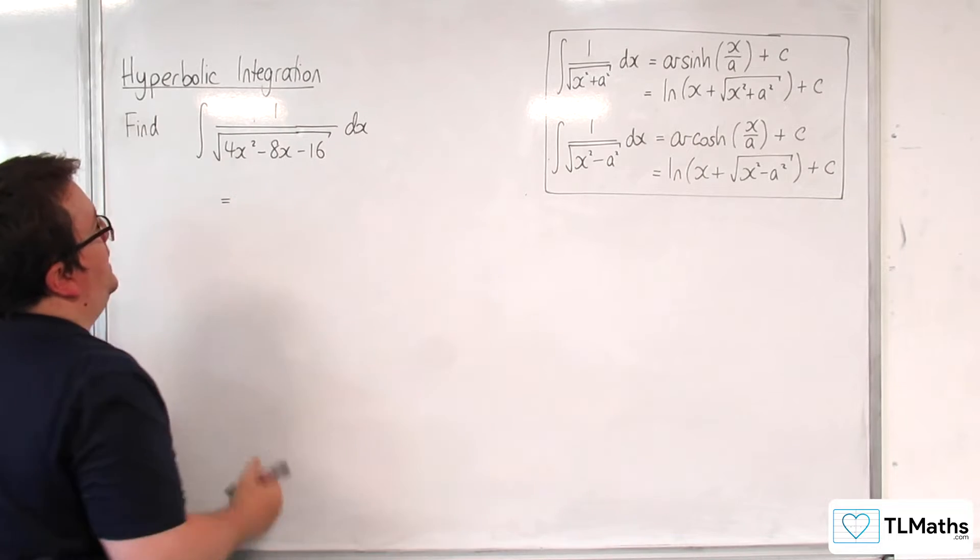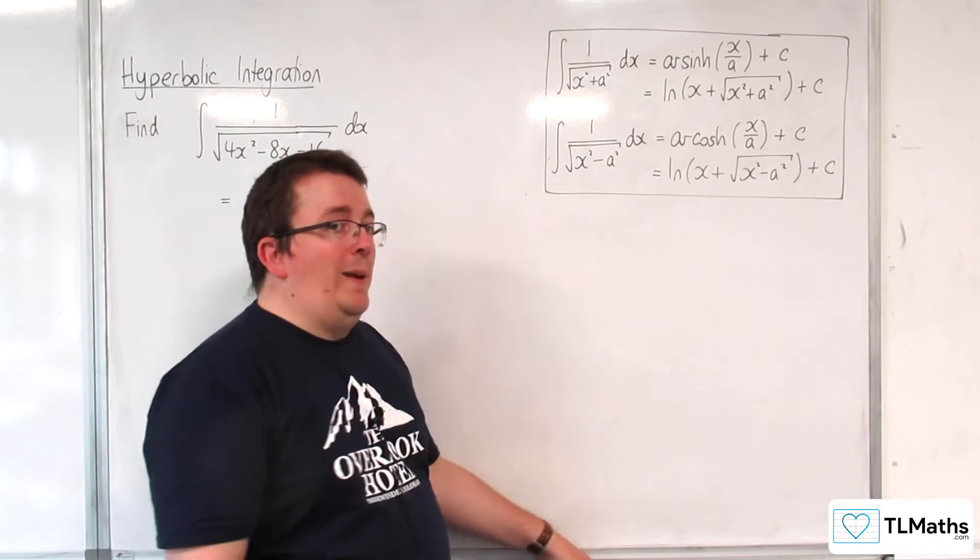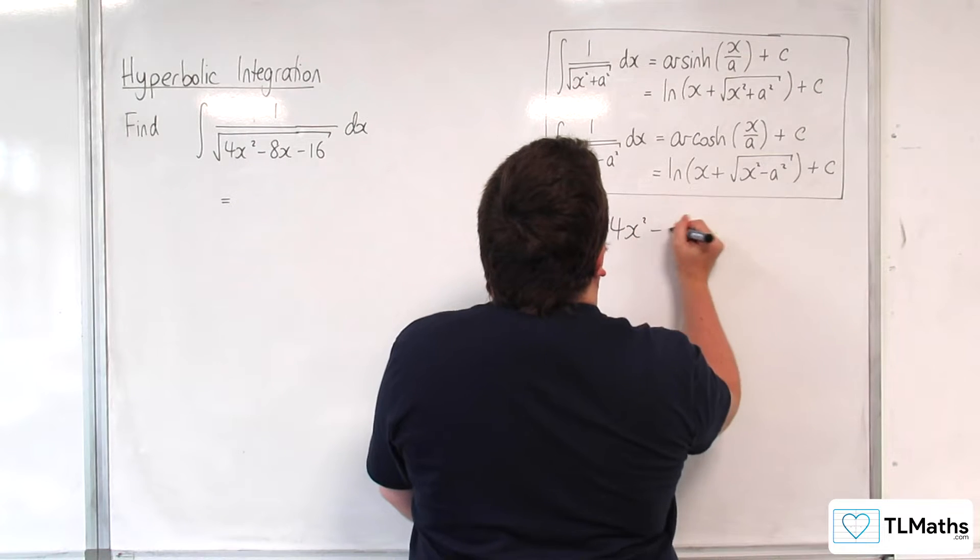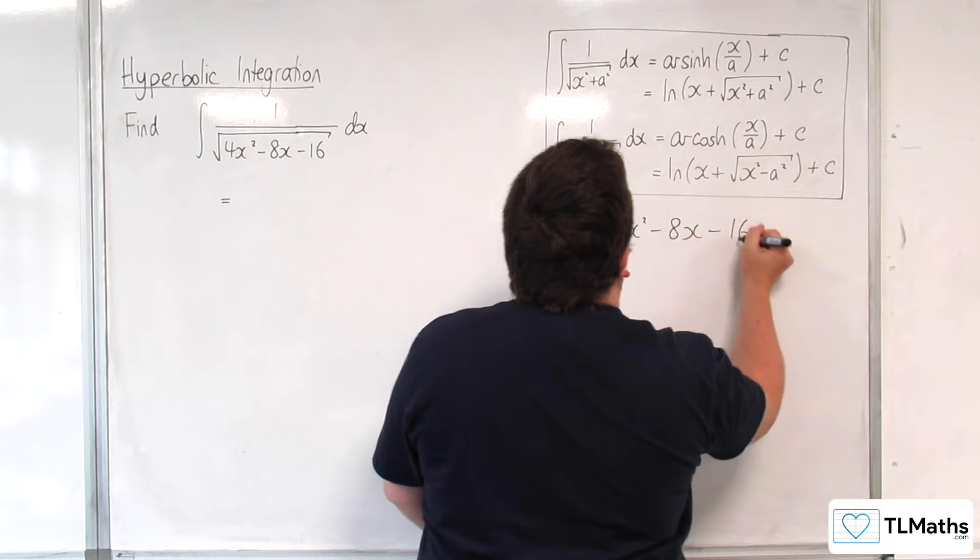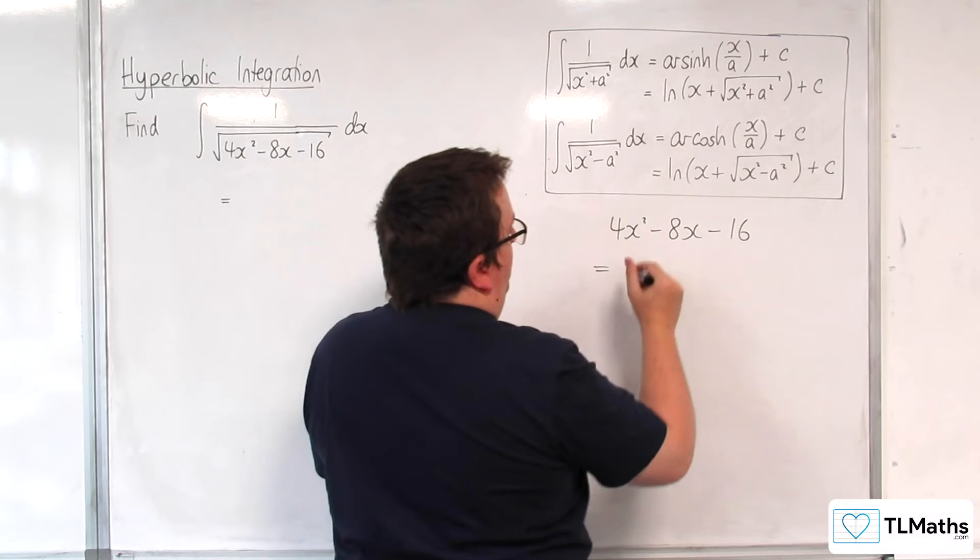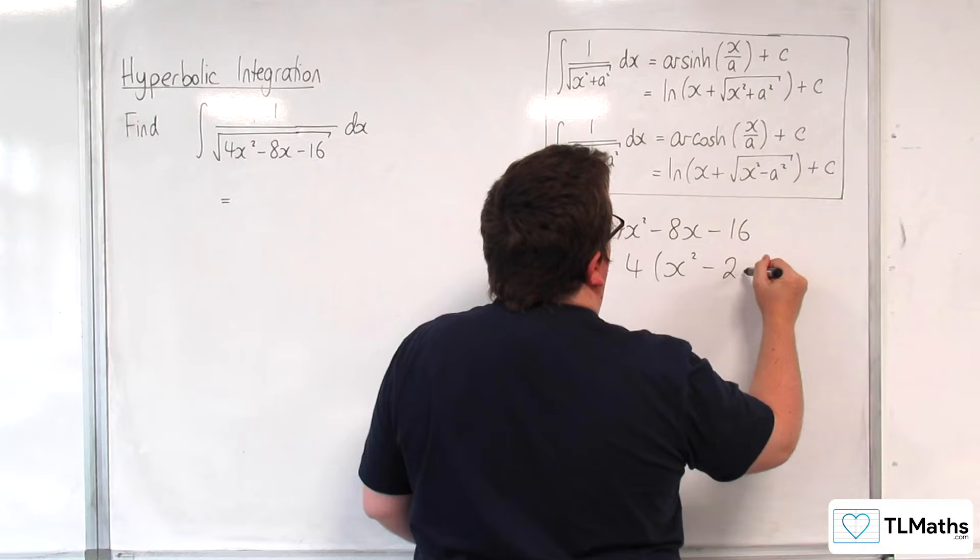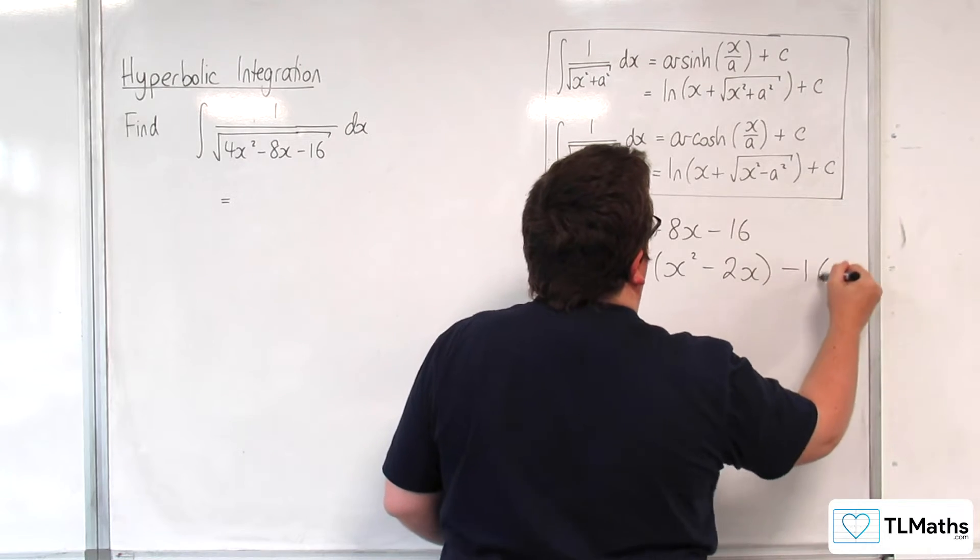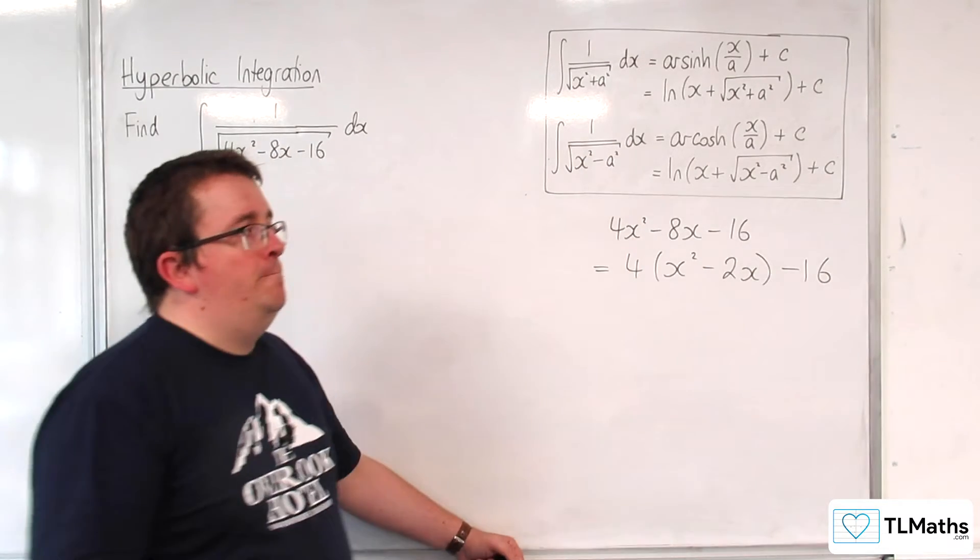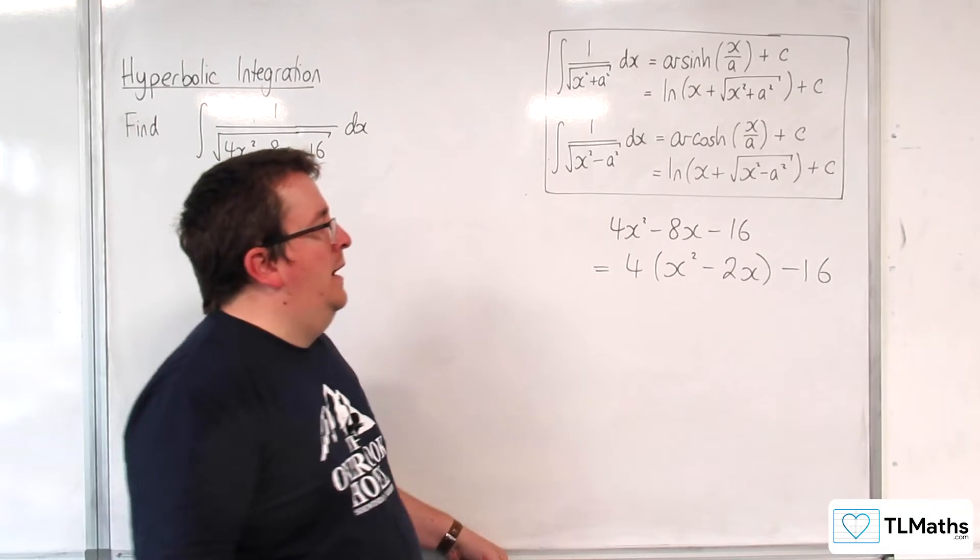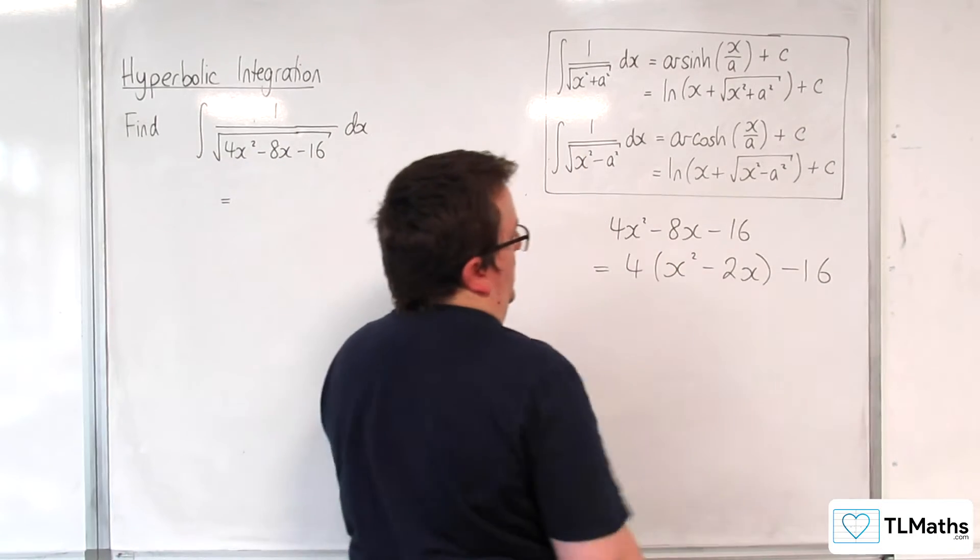So, we need to complete the square on 4x squared take away 8x take away 16. So, to complete the square on this, you factor the 4 out of the first two terms. So, x squared take away 2x. Now, you can factor the 4 out of all three terms if you like. That's perfectly up to you. I only ever deal with the first two terms.